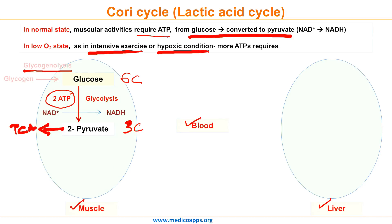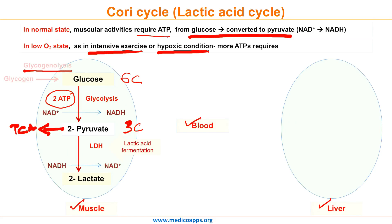But in no-oxygen conditions, what do the muscle cells do? How do muscles acquire energy — that is, ATPs? Pyruvate stays and converts into 2 molecules of lactate or lactic acid in the presence of lactate dehydrogenase (LDH) enzyme, and this process is called lactic acid fermentation. During this conversion, NADH is oxidized back to NAD+, and this reaction is called anaerobic metabolism.